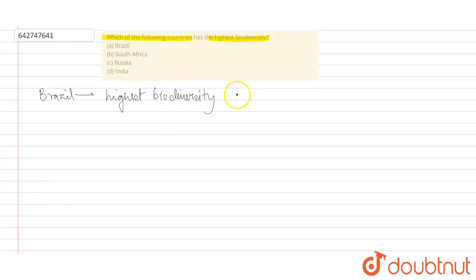Because this country basically possesses one-tenth of the world's overall species. Therefore, it is the country which has the highest biodiversity.